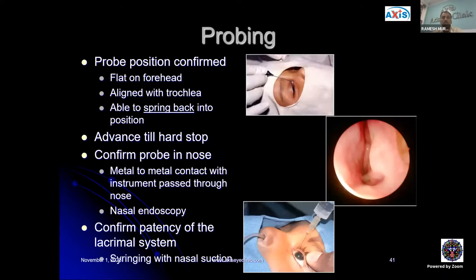Probing position is confirmed when the probe is flat on the forehead, aligned with the trochlea, and shows springing when moved. To confirm the probe is in the nose, a second metal instrument is passed through the nose to feel it, or nasal endoscopy is performed. Patency of the lacrimal system is confirmed by syringing with nasal suction.